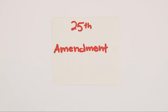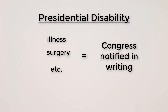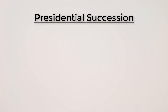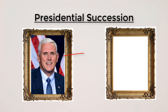The 25th Amendment deals with presidential disability and succession. If the president is temporarily disabled due to an illness, surgery, etc., Congress must be notified in writing and the vice president will take over for the time being. If the president dies, resigns, or is impeached, the vice president becomes president and then chooses a new vice president with Congress's approval.